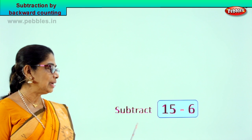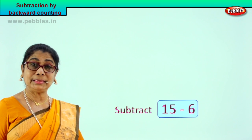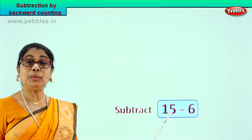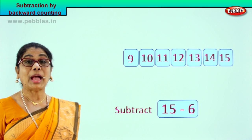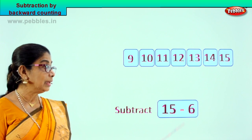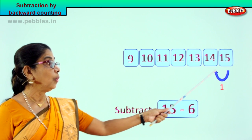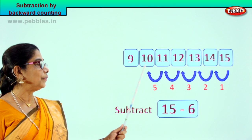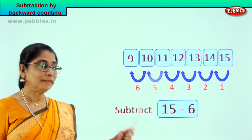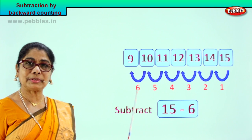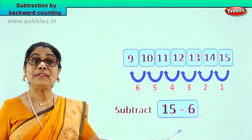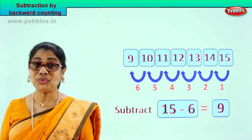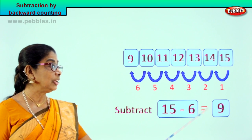Look at the sum we have. The subtraction we have been given is 15 minus 6 — 15 take away 6. That means from the numeral 15 we will count 6 steps backward and we will come to the answer. How many steps? 6. Start. 1, 2, 3, 4, 5, 6. From 15 we counted 6 steps backward and we got the answer. 15 minus 6 is equal to 9.